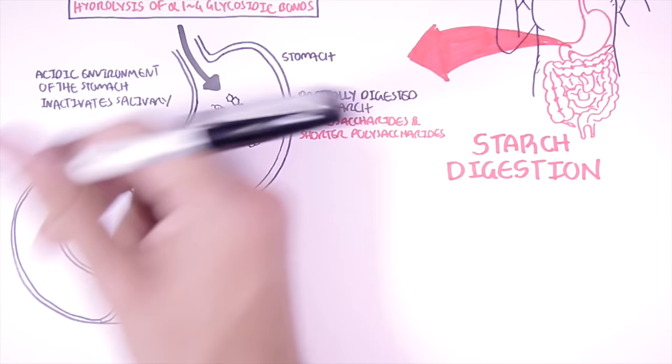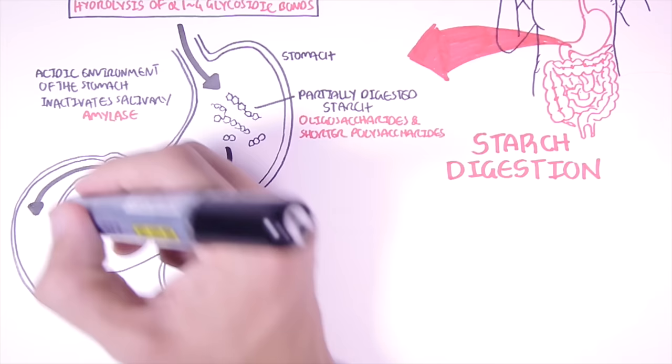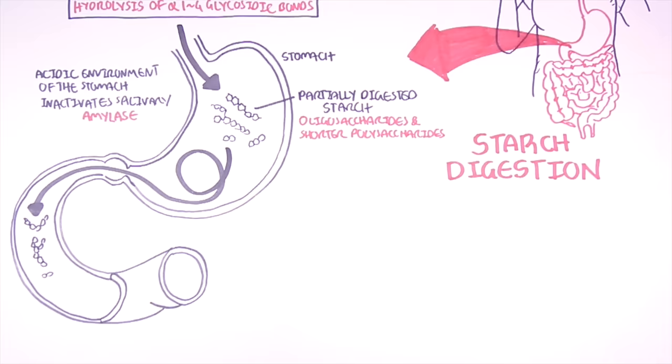And so starch digestion does not occur within the stomach. The stomach will only mix the content around and then allow the starch to reach the small intestine. And it is within the small intestine where most of the digestion and absorption of starch takes place.